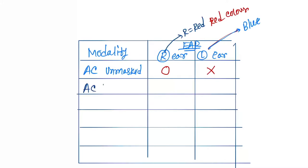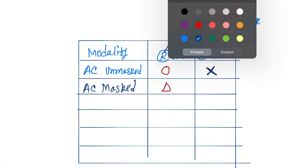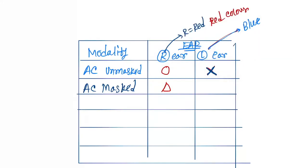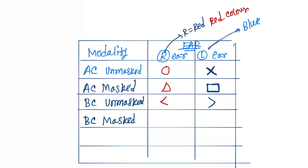Air conduction masked: for the right ear the sign is a triangle, and for the left ear the sign is a square, shown in blue. Bone conduction unmasked: for the right ear it is an open bracket facing right, and for the left ear it faces left. Bone conduction masked has its own respective signs for right and left.